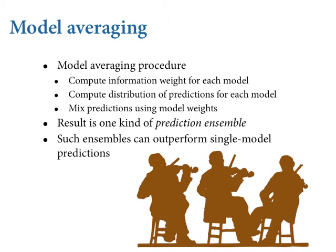Think about this as the ensemble problem. Here's the procedure. First, you compute the information weight for each model. You've got your sample, you fit a series of models to the same data, and from this you can compute your information criterion of choice — I'm going to have you use WAIC, as you are in your homework. From that, you can compute the Akaike weight, or information weight, for each model. Those always sum to one, so they give you the proportion of the prediction ensemble you want to come from each particular model.